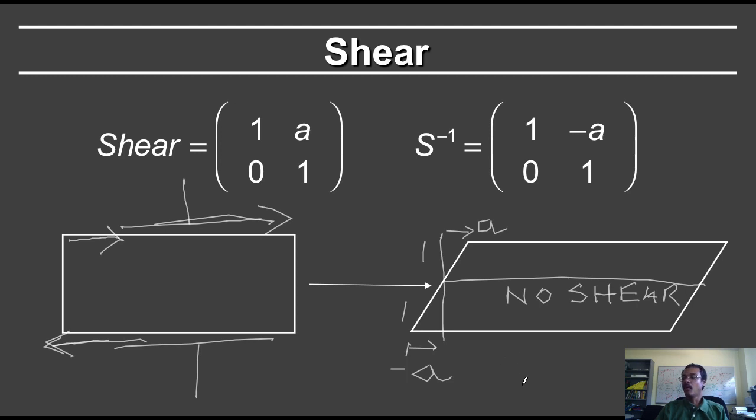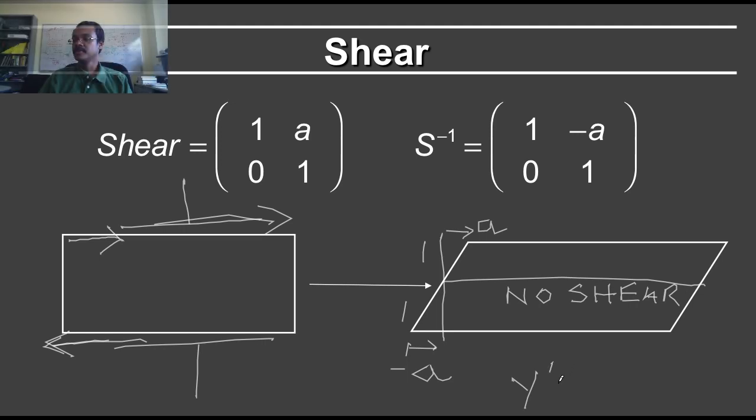So y prime is going to be equal to y. And because of that, the second row of the matrix is just 0, 1.